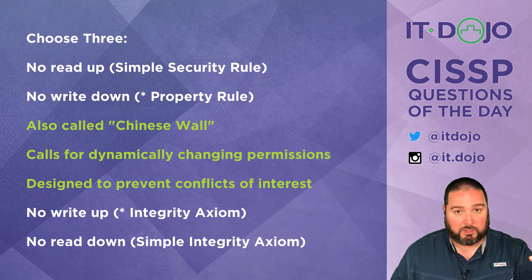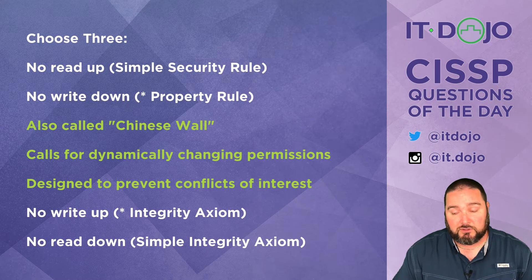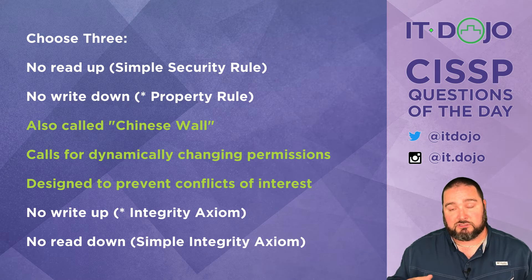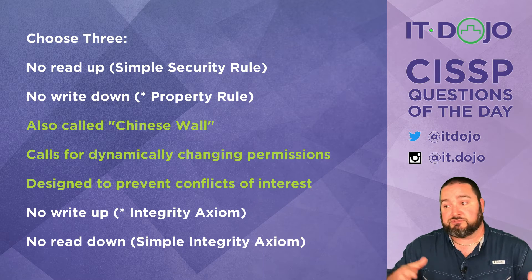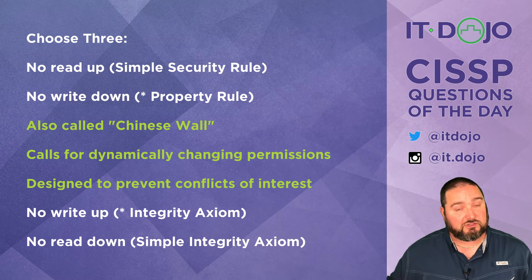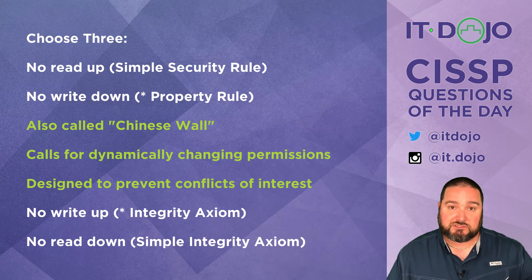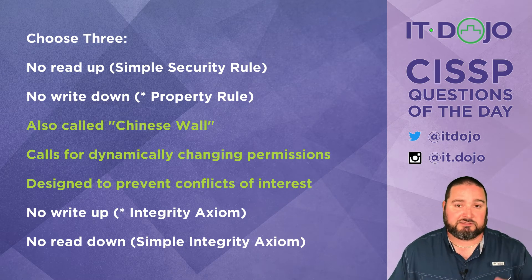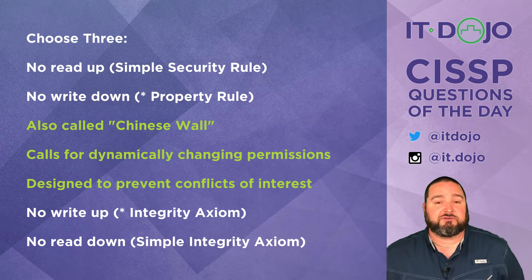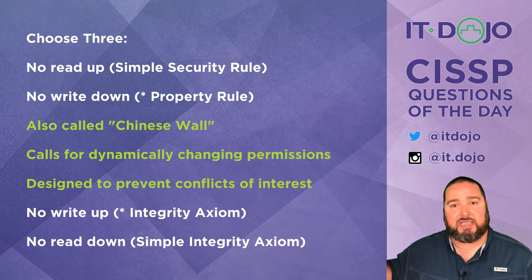That's one of the core rules: if you've ever accessed data from company data set one, and company data set two is in the same conflict of interest class, you're no longer allowed to access data from company data set two using that same principal. It's also perfectly plausible to have another conflict of interest class — for example, a technology companies class with Tech Company A and Tech Company B, separate from the financial services class.